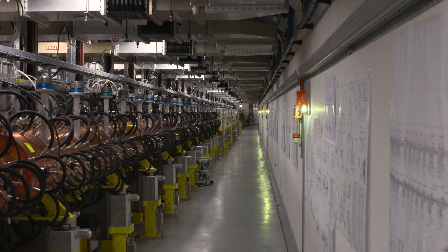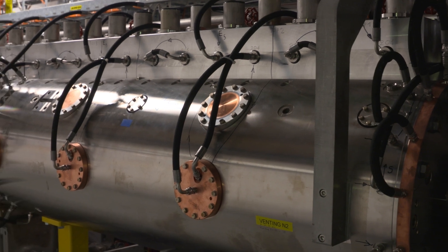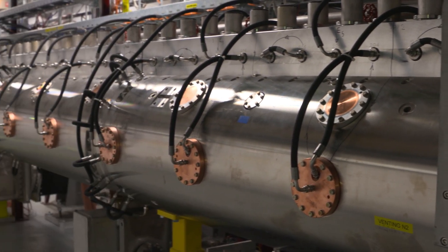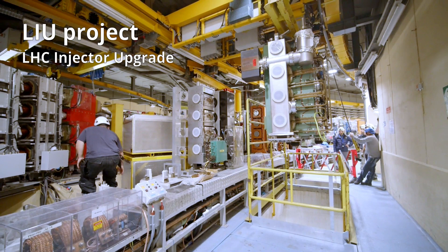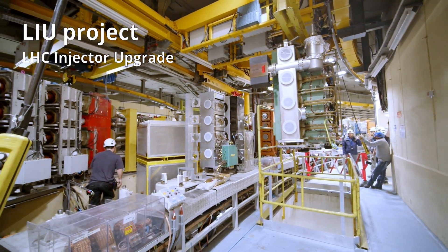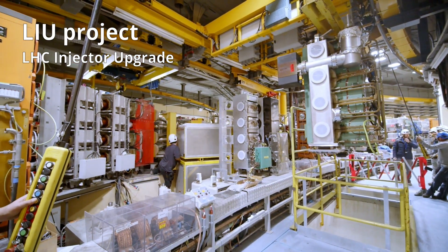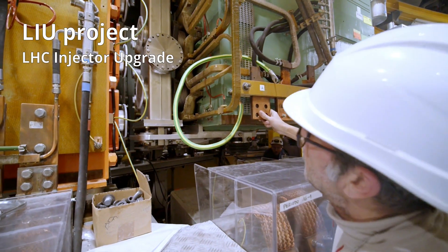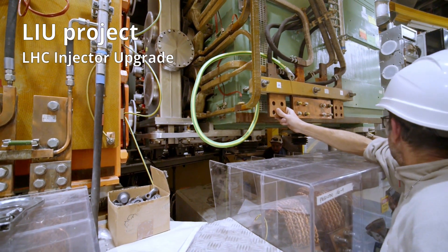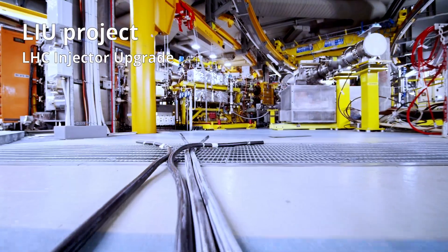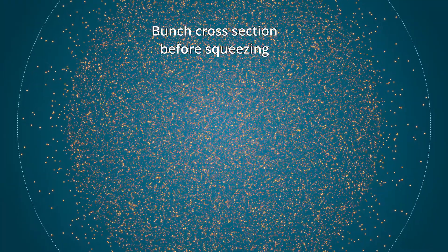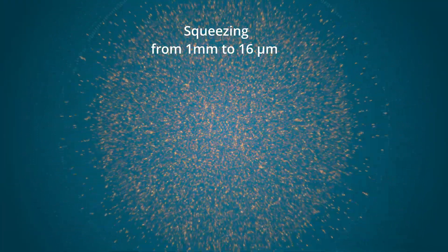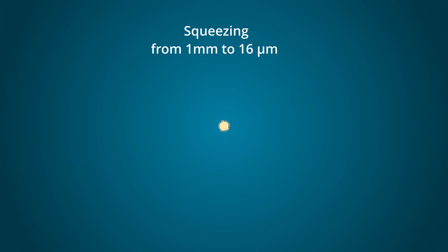To prepare for HL-LHC, CERN has modernized the entire chain of injector accelerators. This upgrade, known as the LHC Injector Upgrade Project, or LIU, was completed in 2021, and the gradual commissioning of the beams took place between 2021 and 2025. The goal is simple but ambitious: to create beams that are both more intense and more precise.